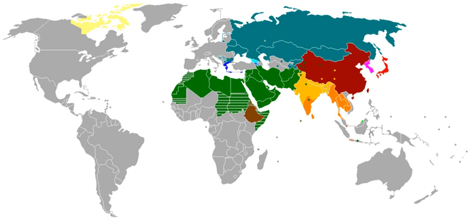Writing systems are distinguished from other possible symbolic communication systems in that a writing system is always associated with at least one spoken language. In contrast, visual representations such as drawings, paintings, and non-verbal items on maps such as contour lines are not language-related. Some symbols on information signs, such as those for male and female, are also not language-related, but can grow to become part of language if often used in conjunction with other language elements. Some other symbols, such as numerals and the ampersand, are not directly linked to any specific language, but are often used in writing and thus must be considered part of writing systems.